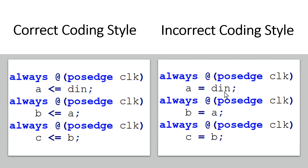Now we have three always blocks, and all these always blocks can work in parallel. But which of the three statements should be executed first? There is no specific guideline for this — and this situation, where the simulator cannot decide which statement to execute first, is called a race condition. As per my observations, simulators pick those statements first which appear early in the .v file. So the first statement in the file will be picked first, then the second, then the third.